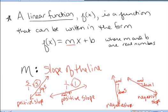The steeper line on the left — going over one down five — has a slope of negative five. The line on the right — over one down one — has a slope of negative one. The steeper line has a slope of negative five, which is more negative, while the shallower line on the right has a slope of negative one.